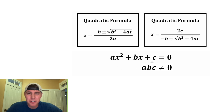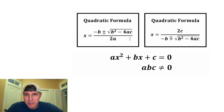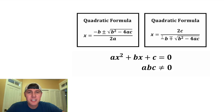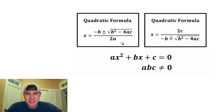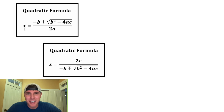Anytime you have ax squared plus bx plus c equals zero, there are two different quadratic formulas to find what x could equal. You might be familiar with negative b plus or minus square root of b squared minus 4ac, whole thing over 2a. But there's also 2c over the quantity negative b minus plus square root of b squared minus 4ac. This quadratic formula will give the exact same answers as this quadratic formula. Would you like to see an example?